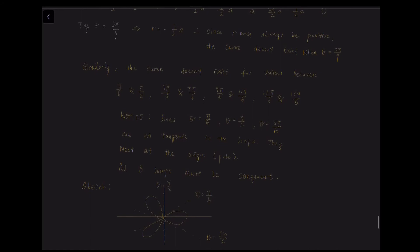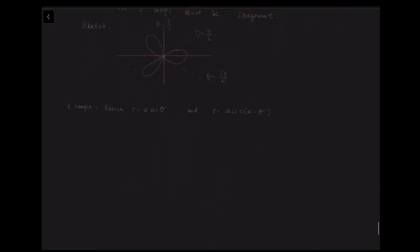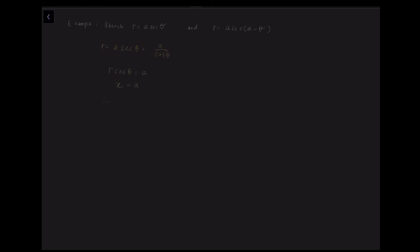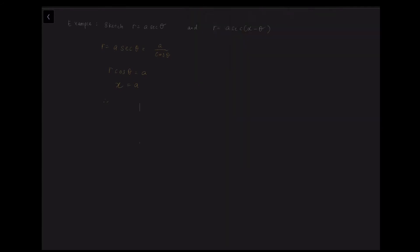Now we'll be sketching two more graphs. The first is r equals a sec theta and the second is r equals a sec(alpha minus theta). For the first one, r equals a sec theta is also equal to a over cos theta. Rearranging gives r cos theta equals a, and since r cos theta equals x, the curve is simply x equals a — a vertical straight line on the graph.